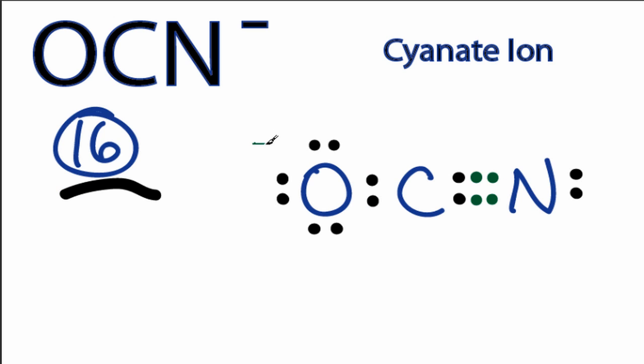When we calculate the formal charges, we'll find that the oxygen has a formal charge of negative 1, carbon is 0, and nitrogen is 0. That makes a lot of sense. We have a negative 1 up here, and the negative charge in our OCN minus Lewis structure is on the most electronegative atom.